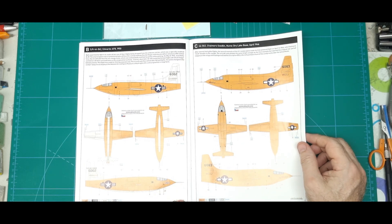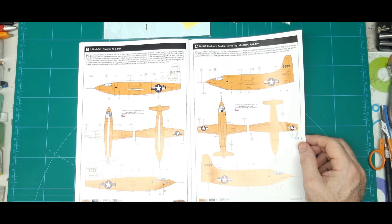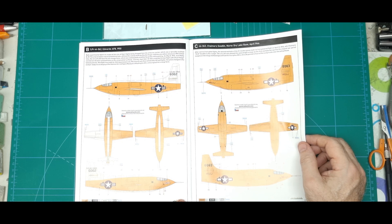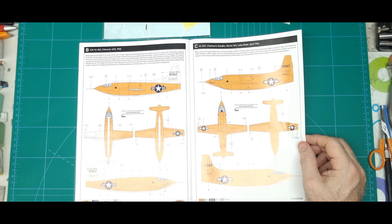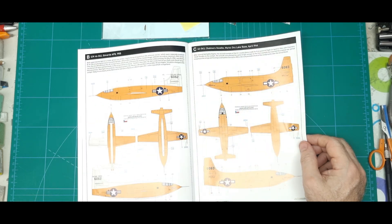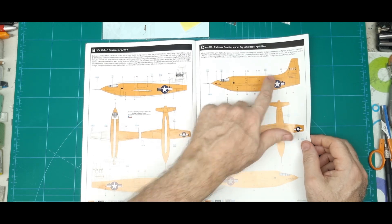And then back to all over orange again. Chalmers Goodland, Muroc Lake Base, April 46. So we're skipping around in timeline here. So this one was actually before this one.